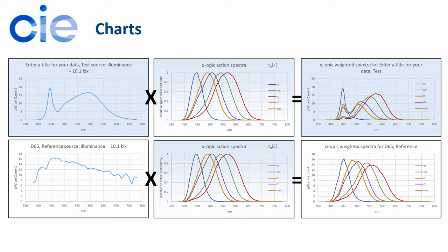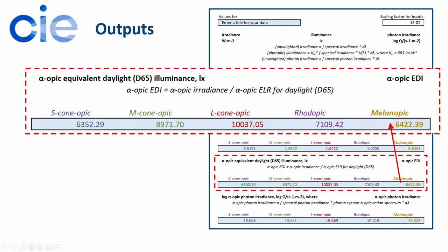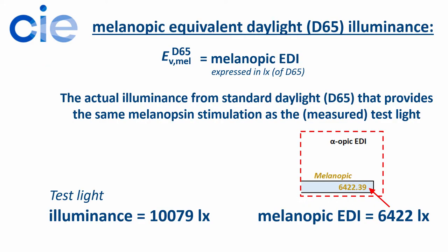And so we also have a sheet showing numerically what the answers are. And for this particular measurement, the illuminance was 10,000 lux. And we can see that using the equivalent daylight illuminance system within the new standard, we get alpha-opic EDI values, equivalent daylight illuminance, and the melanopic EDI is 6,400 lux approximately.